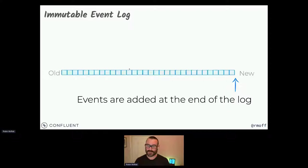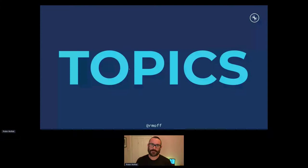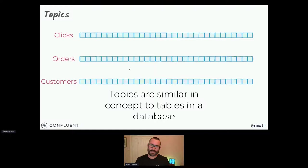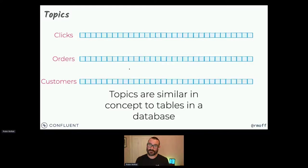We have these events and they get written onto the log. Now let's take that log and carve it up into these things called topics. A topic is kind of like a database table, if you want to think of how we manage and carve up data in terms of different entities. You can have a topic which stores your click events — when someone clicks on your website that's an event, it goes onto your click topic. Those are events going onto the end of this immutable log, classed together as click events on a topic.